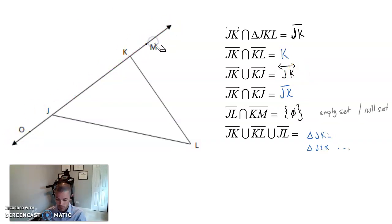And then, ray JK and ray KJ intersection. Intersection and union are different. Union, I want all of it. That's the whole line. Intersection is where do they share? What do they overlap? And that's just the segment. Really important differentiation.